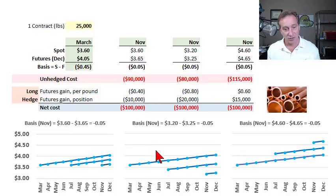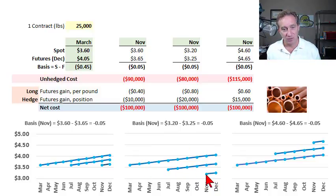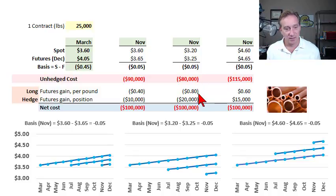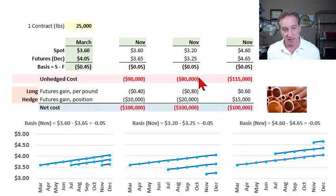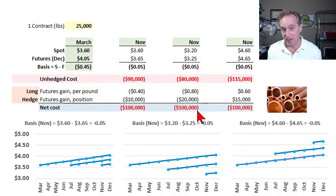In the second scenario, again with an unchanged term structure, the spot price declines to $3.20. The cost of the commodity is $80,000. The futures price dropped from $4.05 all the way down to $3.25, a loss of $0.80 per pound — a $20,000 loss on the futures contract. So although we pay less for the commodity, we lose more on futures. $80,000 plus a $20,000 loss gives a net cost for the long hedge of $100,000.